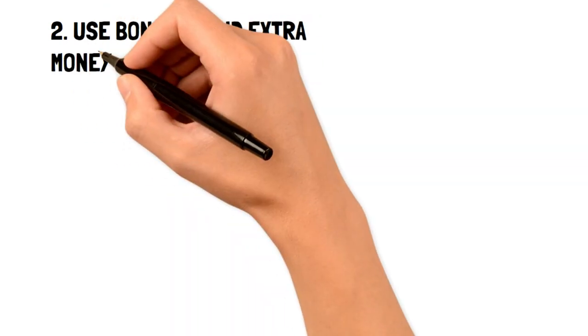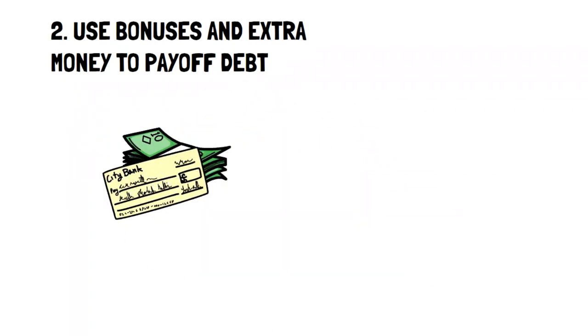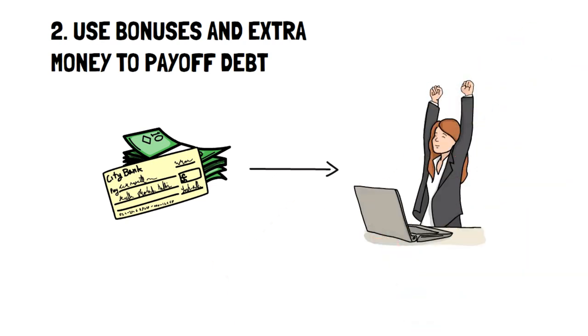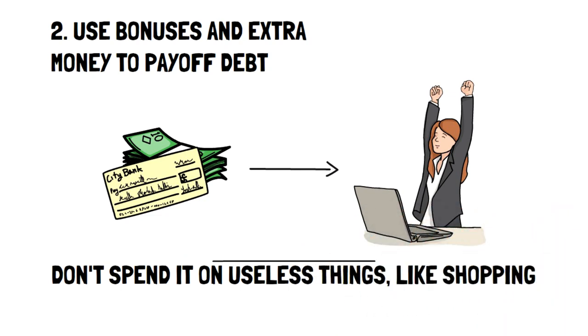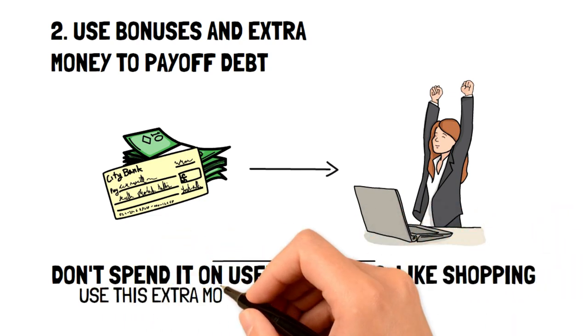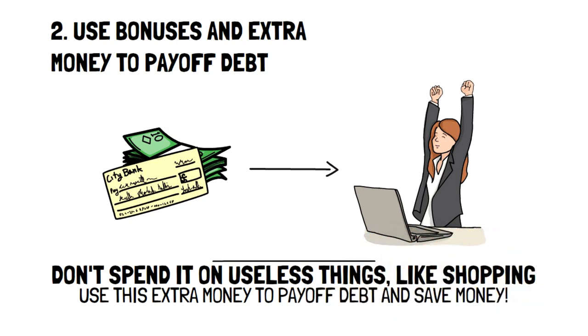2. Use bonuses and extra money to pay off debt. Another blessing that may fall on you is getting some extra money from a bonus or inheritance, or just having a low spending month. The best place to use this extra money is to get rid of debt. On a low income, having extra money come to you is the best way to help you get rid of debt and help you save money really quickly and easily.